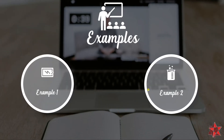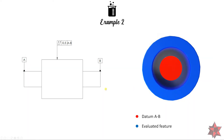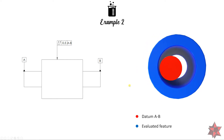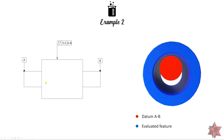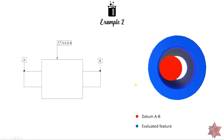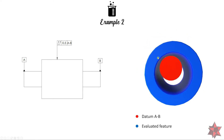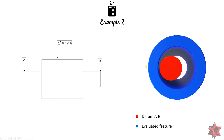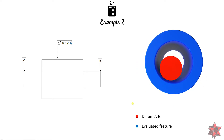For our second example, we have a part with a requirement of total runout of 0.5 millimeters from the common axis of datums A and B — so A-B is a common axis. This is how we identify the requirement on the drawing. Interpreted in an exaggerated way, the whole surface of the middle cylinder is allowed to move from the common datum within a total tolerance of 0.5 millimeters.